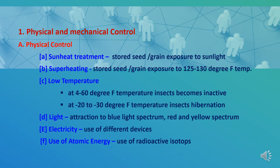Third is low temperature. Low temperatures are not as effective as high temperatures in killing insects. Insects become inactive at temperatures between 4 to 60 degrees Fahrenheit, but they are not killed. At temperatures of minus 20 to minus 30 degrees Fahrenheit, pests hibernate frequently. Refrigerators and cold storage are used for this purpose, and this is a somewhat costly method.